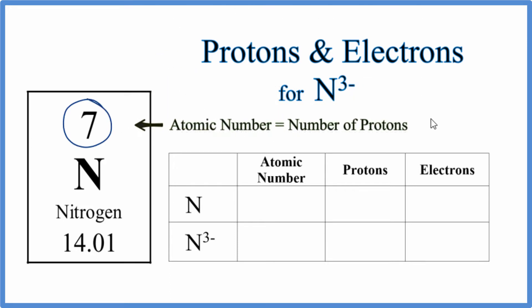The atomic number is the number of protons. So for nitrogen, we have an atomic number of seven, which means we have seven protons.